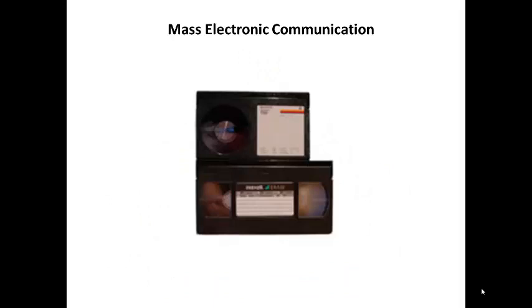In 1975, Sony introduced Betamax, a consumer-level analog video cassette magnetic tape recording format that allowed consumers to record TV and watch it later. Rival JVC developed the competing VHS format, which dominated the marketplace, while Sony battled a court challenge over whether using video cassette recordings for time-shifting was illegal. The Supreme Court voted that it was fair use, giving consumers more control over what they watch.